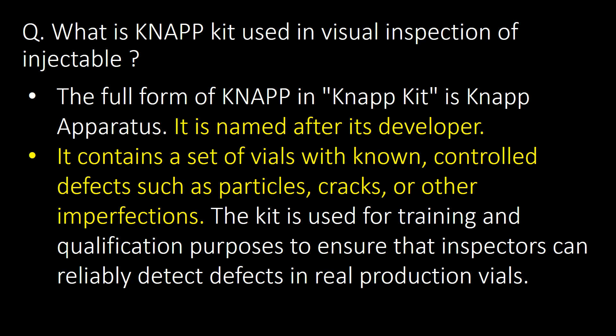What is a NAP kit used in visual inspection of injectables? The full form of NAP in NAP kit is NAP apparatus, named after its developer. It contains a set of vials with known control defects such as particles, cracks, or other imperfections. The kit is used for training and qualification purposes to ensure that inspectors can reliably detect defects in real production vials.